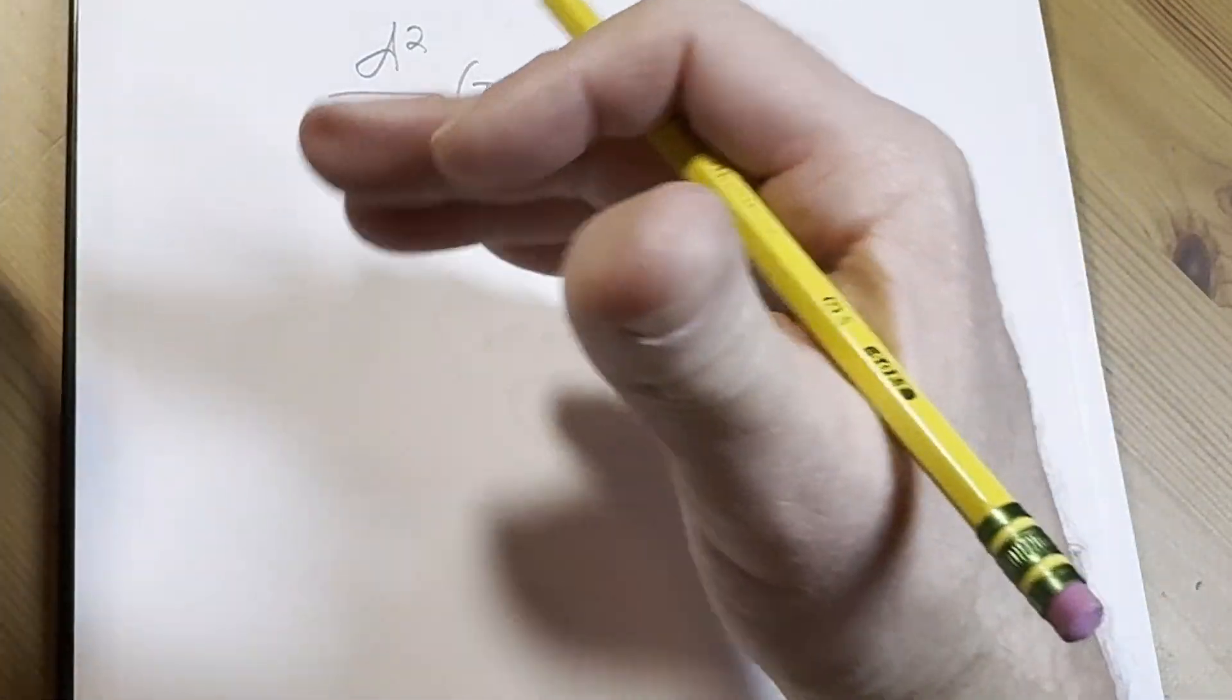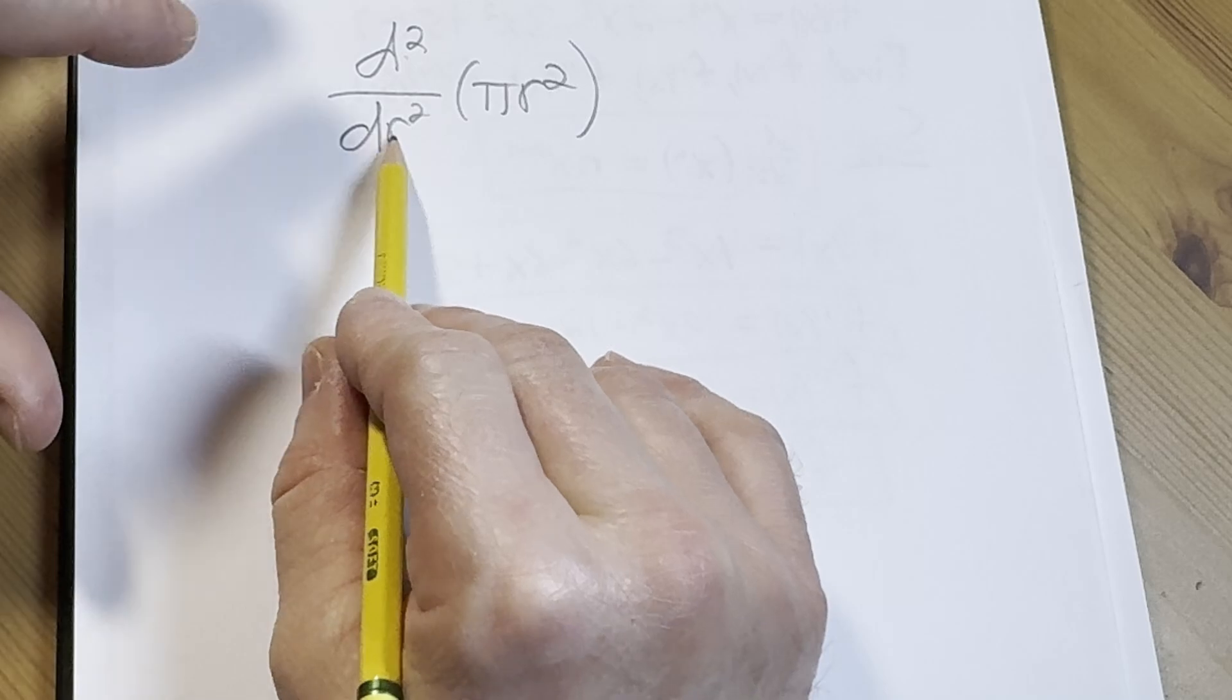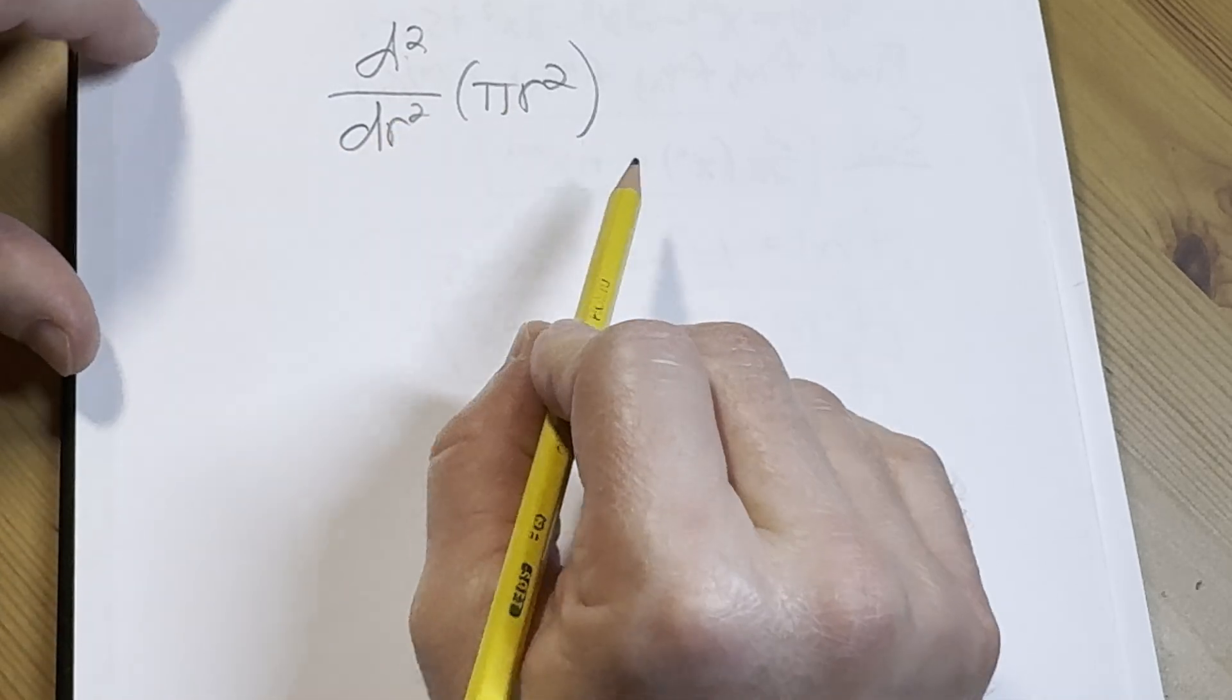All right, the instructions are to evaluate this expression. We have to find the second derivative with respect to r of pi r squared.